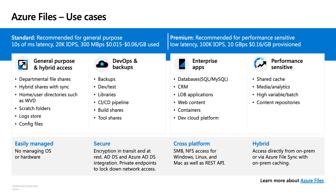There are basically two categories in which these file shares are offered: standard and premium. These file shares are offered based on performance categorization — standard being lower performance than premium. Standard file shares are generally best suited for general purpose file shares and user directories.